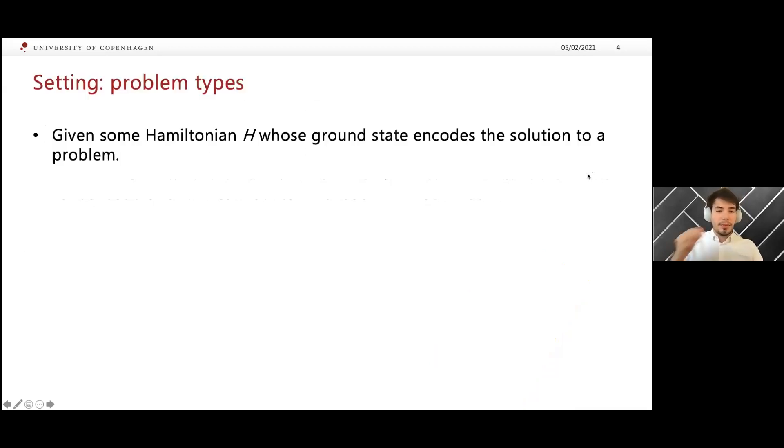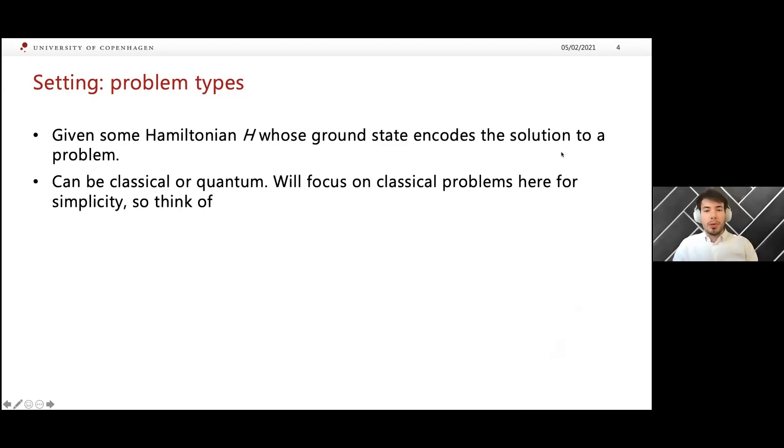Let us define the problems we care about a bit more precisely because, of course, optimization is a very broad topic. We're going to assume we're given some Hamiltonian H and its ground state encodes the solution to a problem we care about. So we might either want to approximate its ground state energy or really obtain the ground state. In principle, our technique applies to both classical and quantum problems, but we will focus mostly on classical problems here for simplicity. You should be thinking of trying to find the ground state of an Ising Hamiltonian like the one shown.